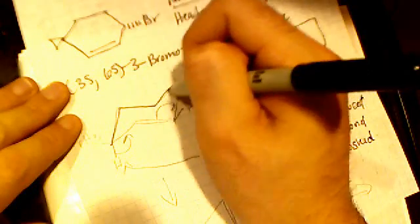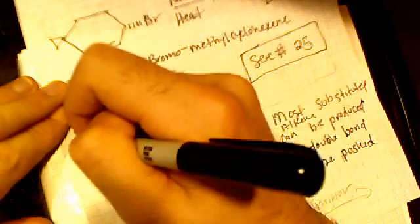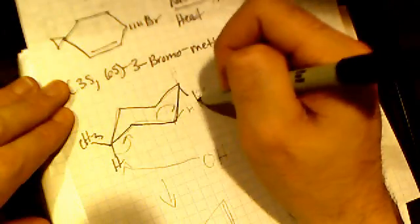All right, so here's our molecule in the chair form. CH3 is coming out at us. The bromine is going away from us.